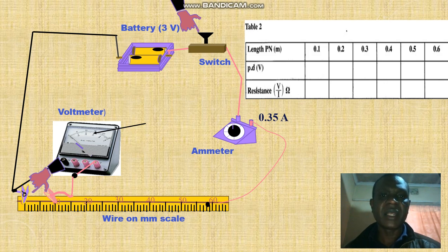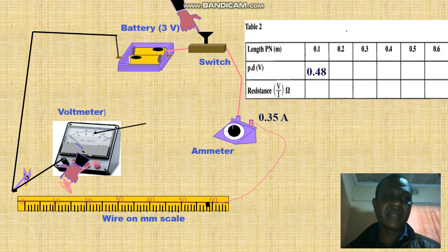So we have PN and putting on the switch, we get the voltmeter reading and ammeter reading. Ammeter reading is 0.35. Voltmeter reading is 0.48. We record it.